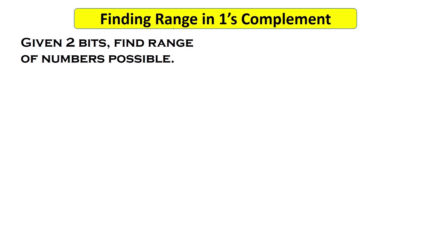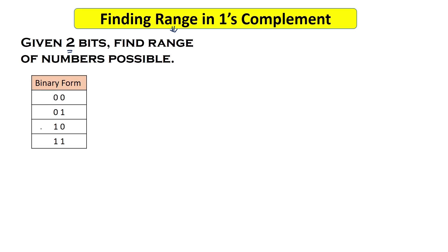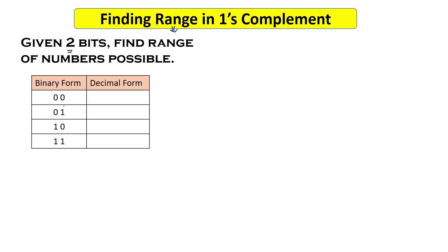Now let's understand the concept of range in one's complement. Range means: given a certain number of bits, what different numbers can be represented? For two bits, there are four combinations: 00, 01, 10, 11. The numbers 00 and 01 have MSB 0 so they are positive. For positive numbers, we don't flip the bits, so they represent 0 and 1 respectively.